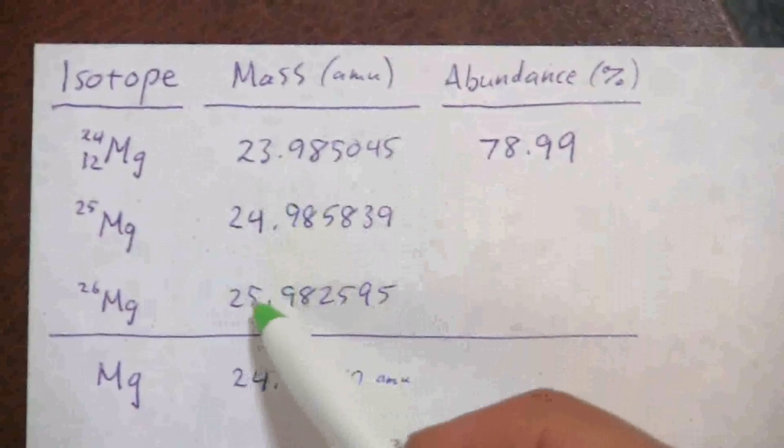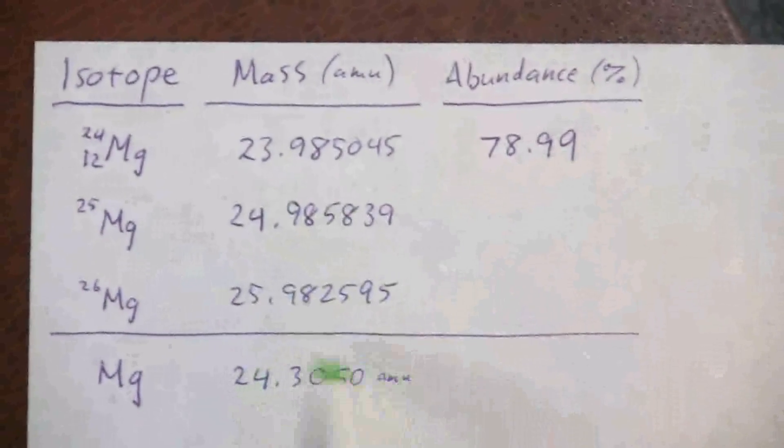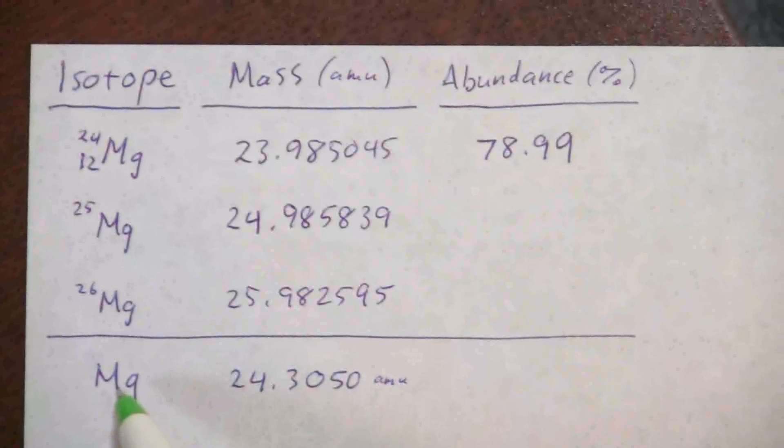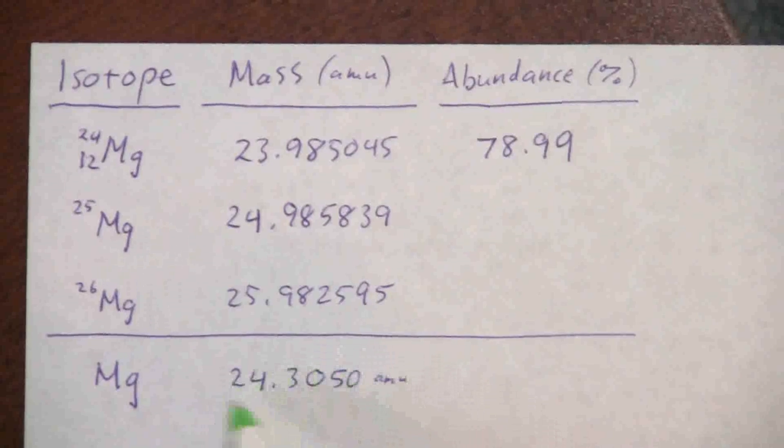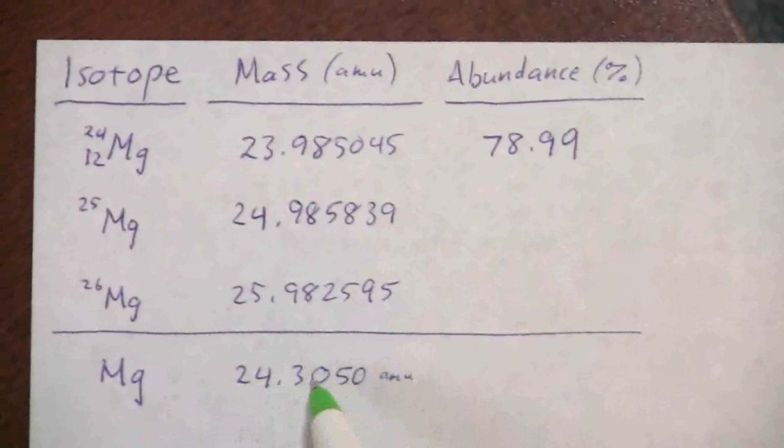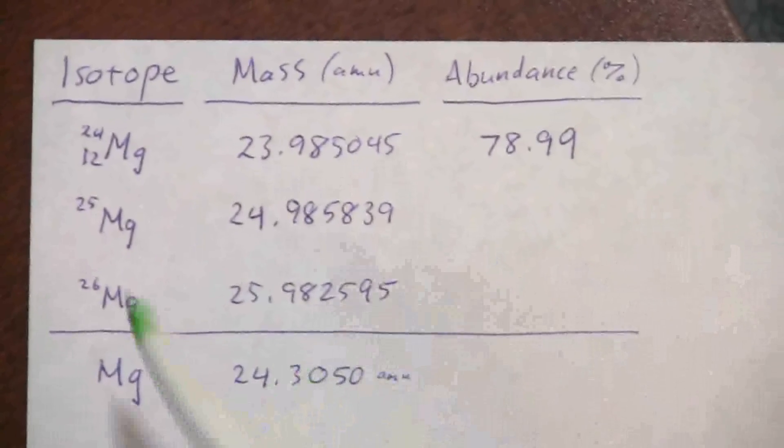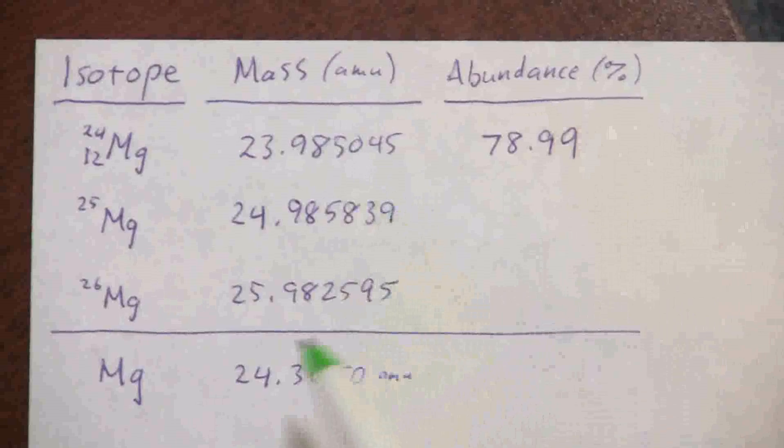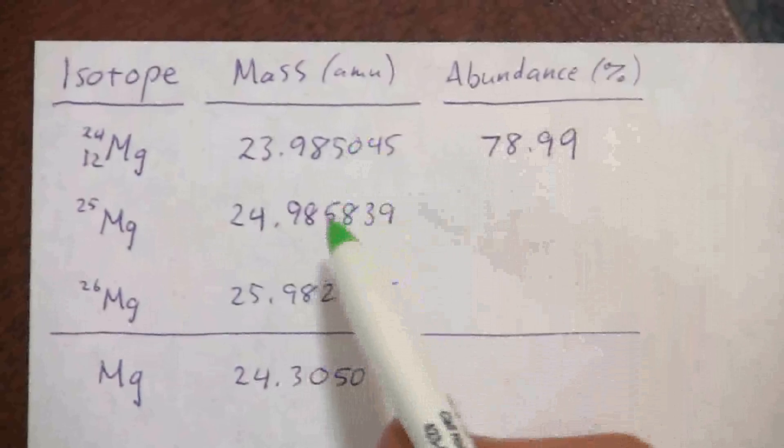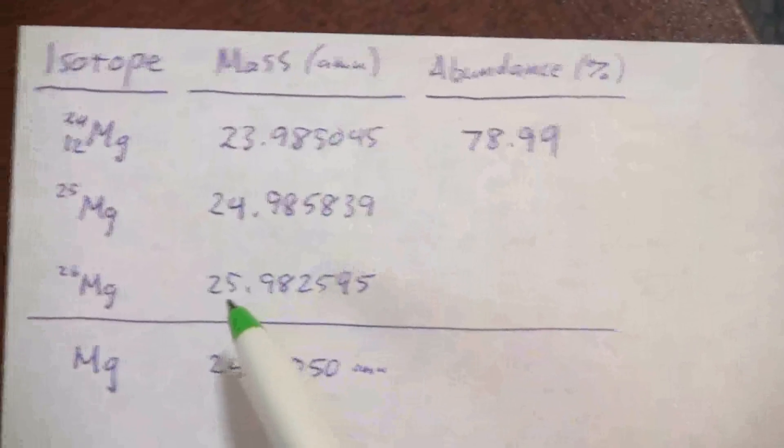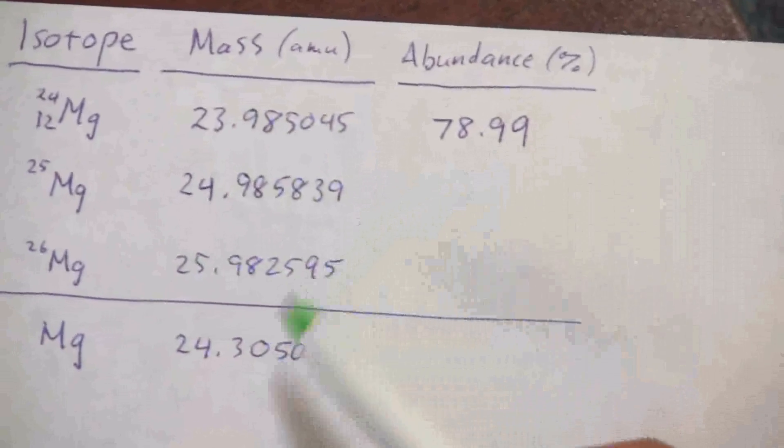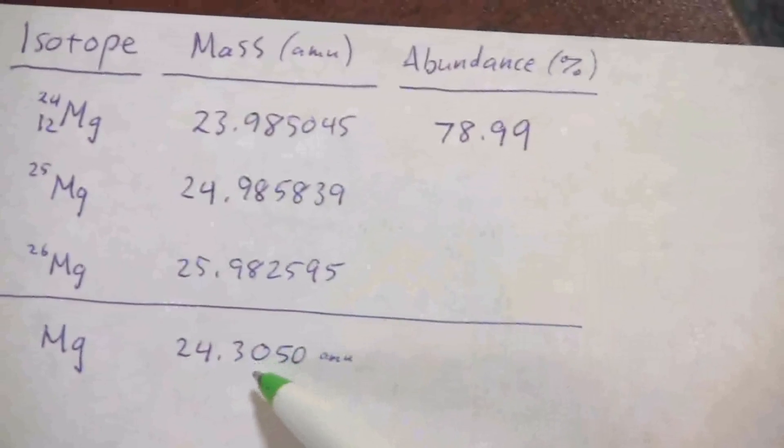So that's why those are very close. But you'll notice that down here I have the atomic mass of magnesium, which comes from the periodic table, and it's not so close to a whole number. And the reason for that is because this is an average of all of these. There's no one atom of magnesium that has this mass. They have these masses. But when I average out the mass, I get this number in between.